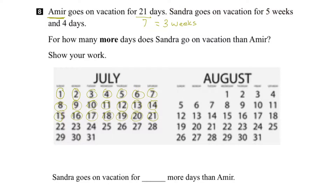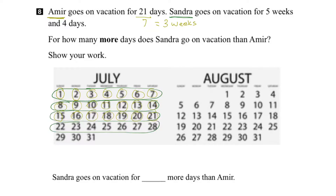She goes on vacation for 5 weeks and 4 days. Let's use green for Sandra. She goes on for 5 weeks — I'm going to circle the entire week. Remember, they're both starting July the 1st. So Sandra has 1 week, 2 weeks, 3 weeks, 4 weeks. When we get to the 5th week, it's broken over 2 months — the first 3 days in July and the last 4 days of the week are in August.